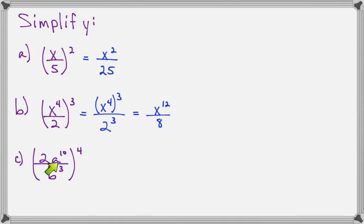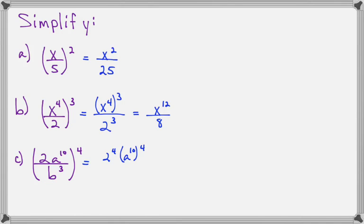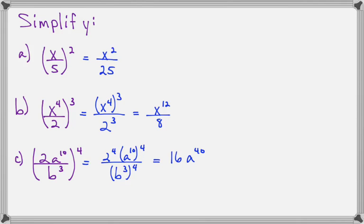On 2a to the tenth over b to the third, all raised to the fourth, we have to do the fourth power to everything in the parentheses: 2 to the fourth, a to the tenth to the fourth, and b to the third to the fourth. Now 2 to the fourth will be 16, a to the tenth to the fourth will be a to the fortieth, and b to the third to the fourth will be b to the twelfth.